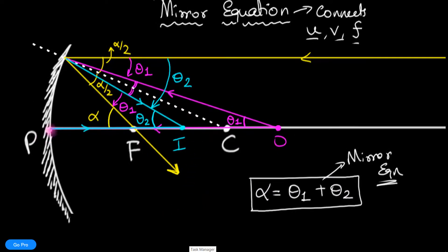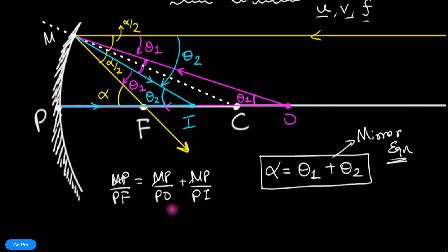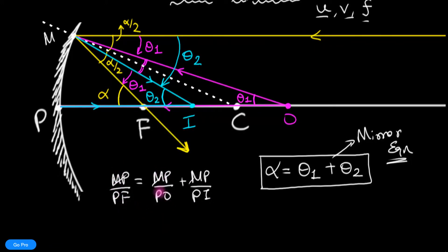And to come to the familiar equation, where I actually connect the object distance and image distance and everything, let me call this point as M, and let's use the arc formula. If you use the arc formula, alpha is MP divided by PF. So this is MP divided by PF. And that is equal to theta 1, which is MP divided by PO plus theta 2, which is MP divided by PI. You can take MP common and cancel that. And guess what you have now? You now have 1 over the focal length, 1 over the object distance, plus 1 over the image distance.